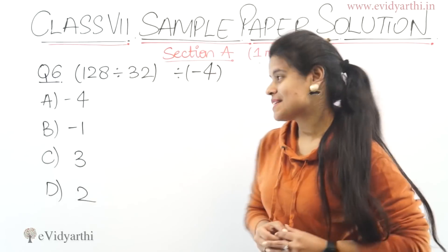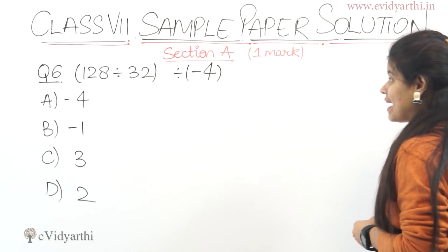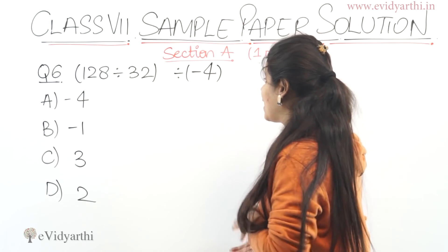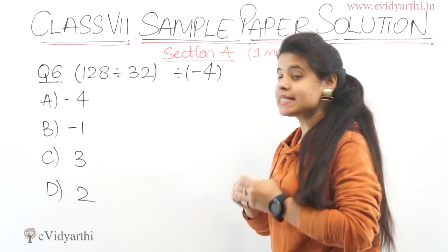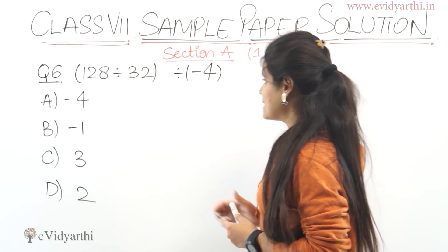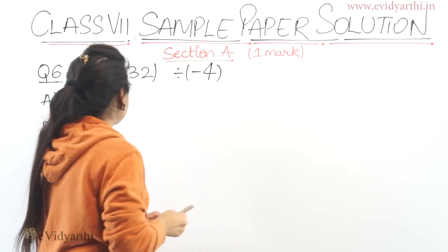Now coming to the sixth question: 128 divided by 32 and then divided by minus 4. So we will get to know the answer. First we will solve it.